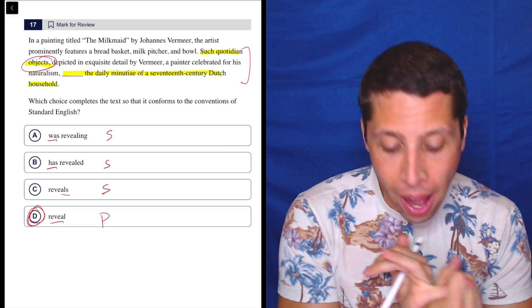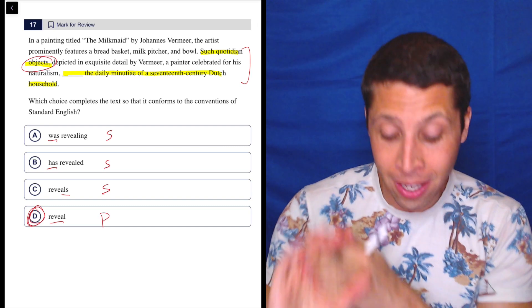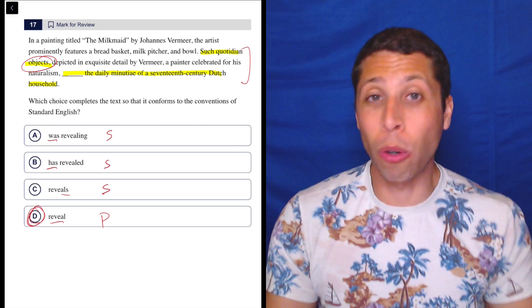So Vermeer is not the subject. A painter is not the subject. Naturalism is not the subject. We can kind of ignore all that.